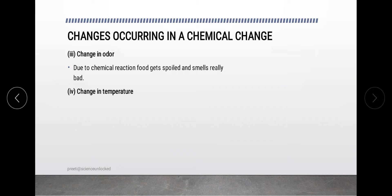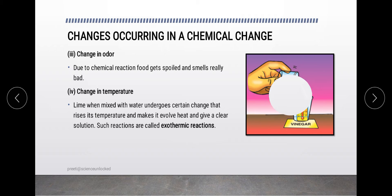Next we have the change in temperature. It happens many times that when a chemical change takes place, there will be a lot of heat released from the setup. Such a reaction is called an exothermic reaction, because the heat is created inside the system and moving out of it. This heat results from the reaction between the molecules of the combining reactants.